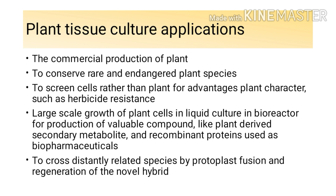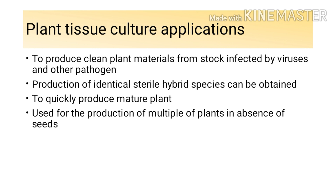Next is the use of plant tissue culture to cross distantly related species by protoplast fusion and regenerate novel hybrids. If you have two distantly related species, by performing protoplast culture you can fuse them. When you have characters from two different species present in a single individual, you can say you have a hybrid form, because characters from two different species are available. With the help of protoplast culture, you can regenerate hybrids by fusing the protoplasts of two distantly related species.